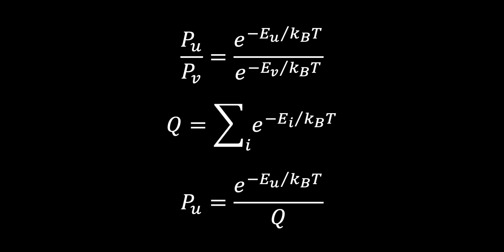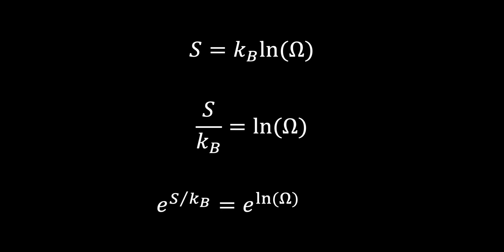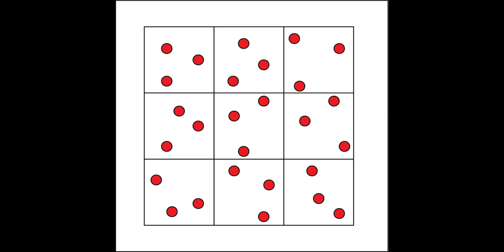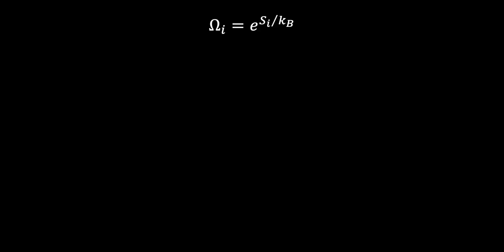Let's start the derivation with the Boltzmann definition of entropy, which states that the entropy of a system with fixed energy, volume, and number of particles equals the Boltzmann constant multiplied by the natural log of the number of ways the system can be arranged. I can rearrange this equation by dividing by the Boltzmann constant and raising both sides by the natural number e to get that the number of ways a system can be arranged equals e raised to the entropy divided by the Boltzmann constant. In our canonical ensemble, each system may have a slightly different energy but is at the same temperature, so we can write this expression for an individual system i.